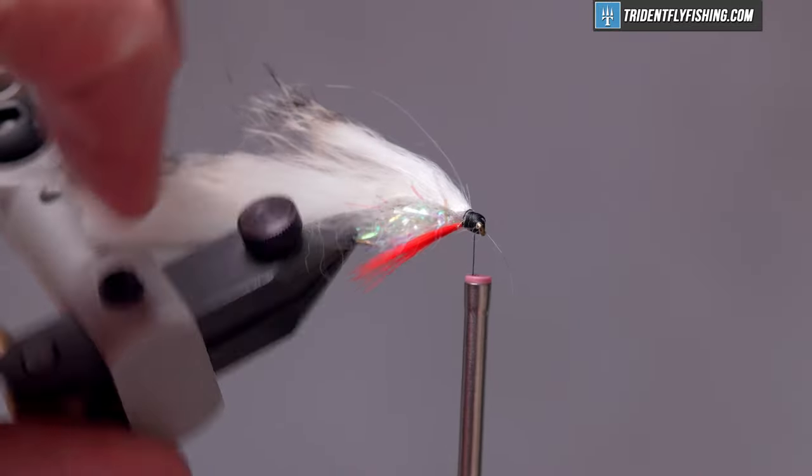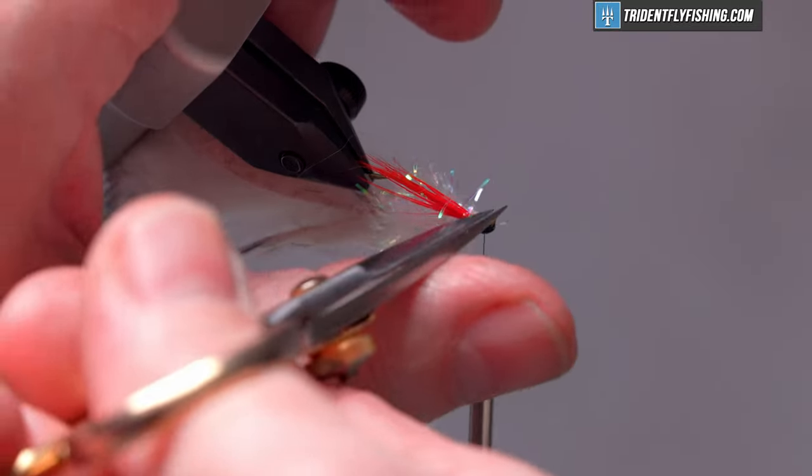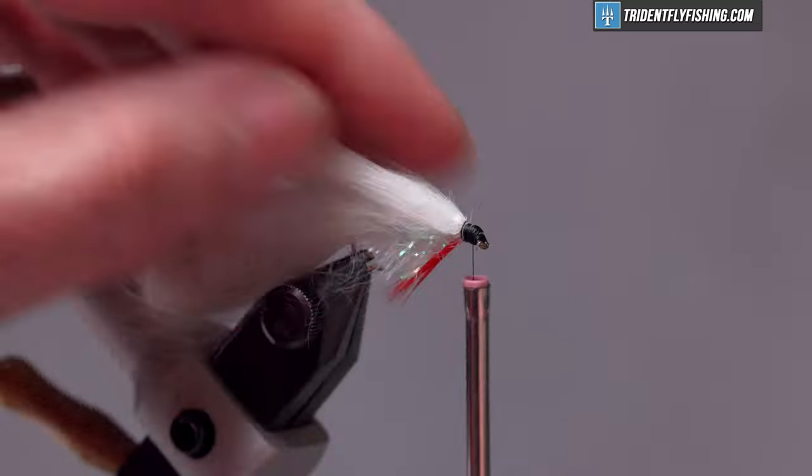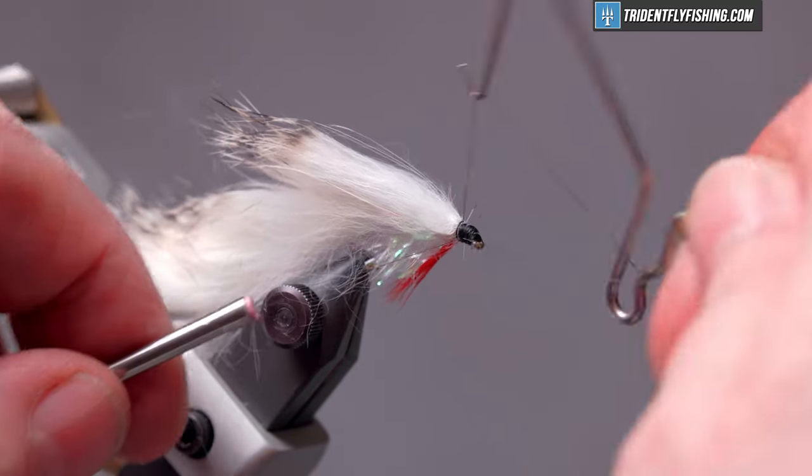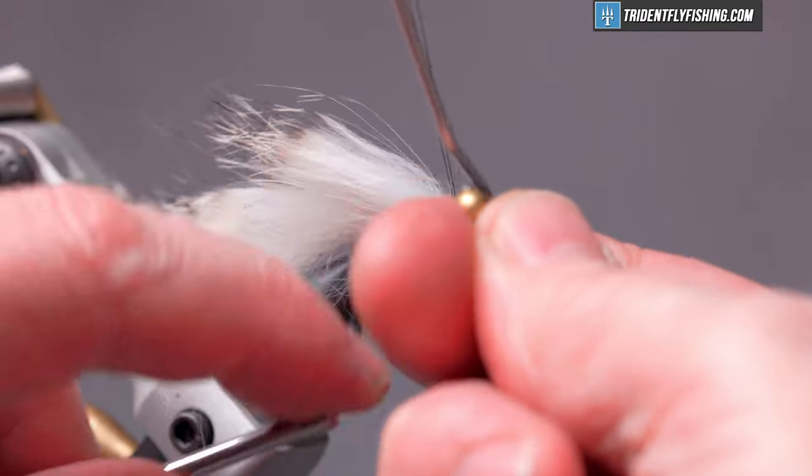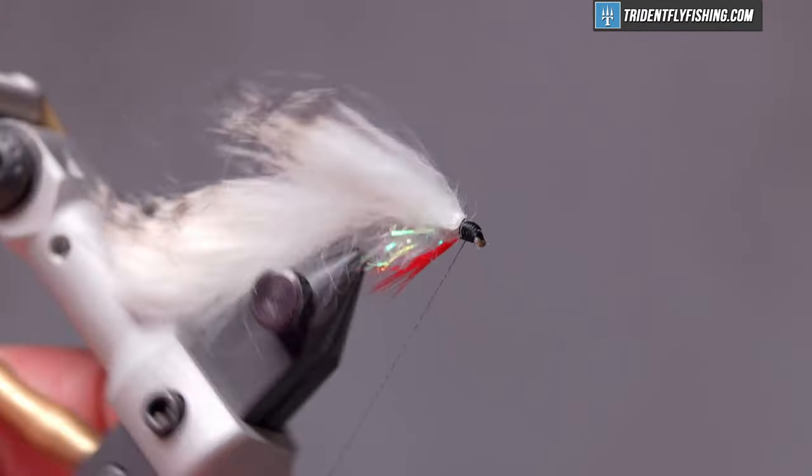Looks like we've captured a couple of fibers here we'll get rid of. Make a 4-5 turn whip finish. Cut our thread.